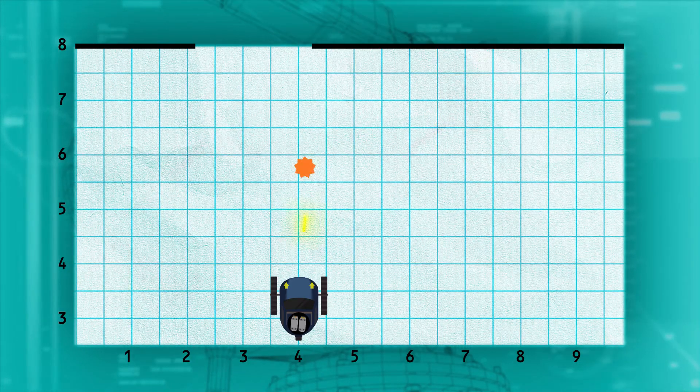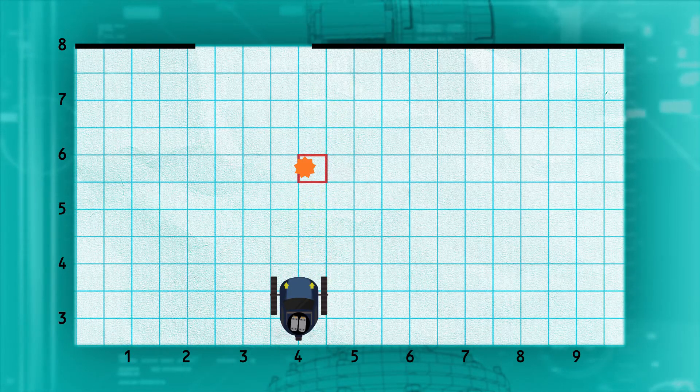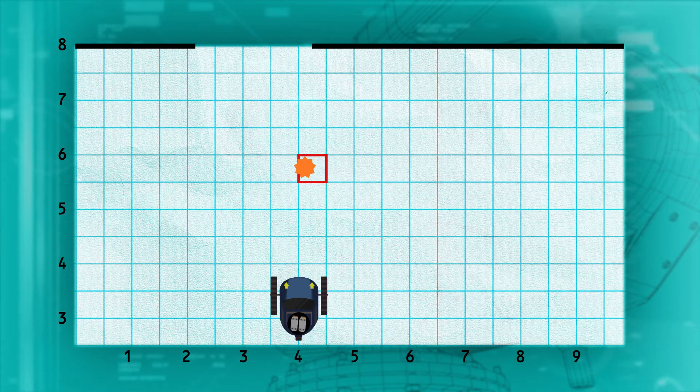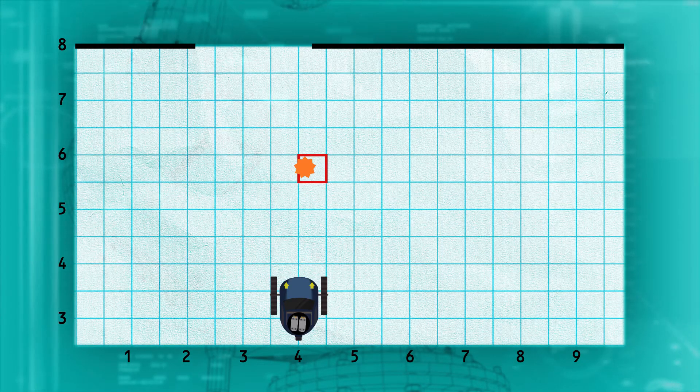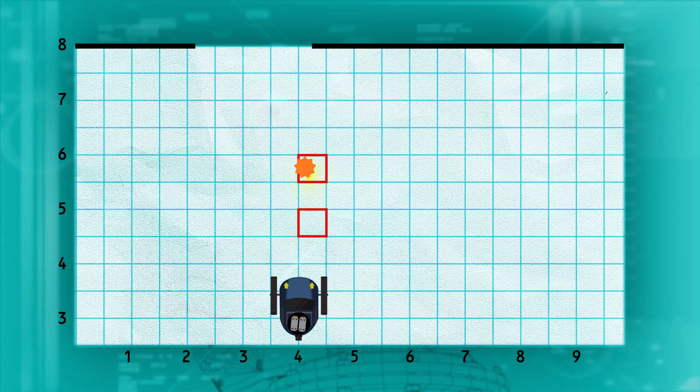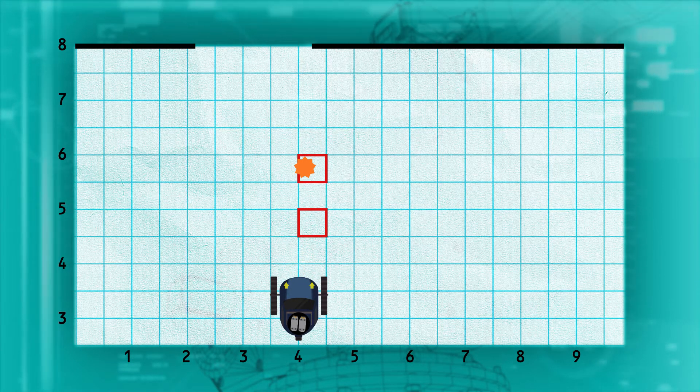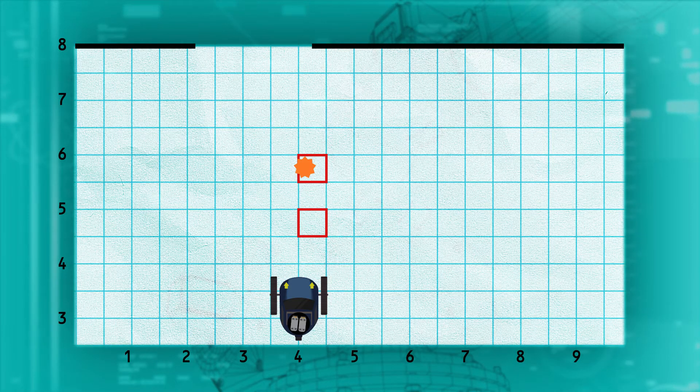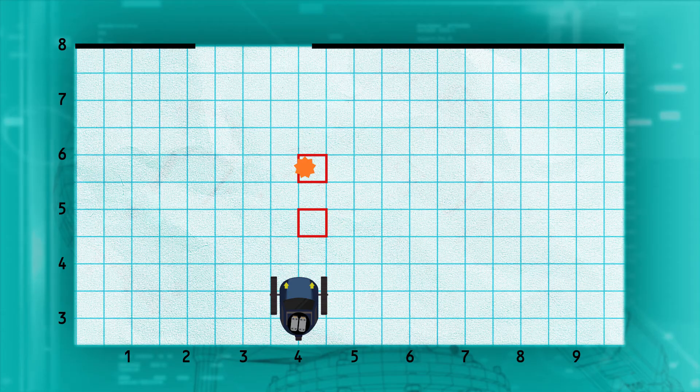For example, if a robot gets 100 reflections back from a cell and only one of those reflections indicates the cell is empty, the robot can still be pretty certain something really is there. On the other hand, if we have 100 pulses go through a cell and only one reflection back indicates there is an obstacle there, that one reflection is probably wrong. The cell is probably empty.